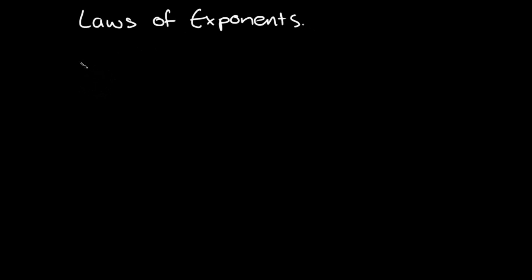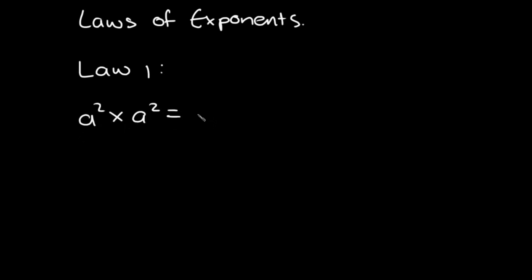For Law 1, the rule says that where the bases are the same, we add the exponents when we are multiplying. So when you are multiplying and the bases are the same, we add the exponents — in this case it'll be two plus two, which gives a to the power of four.